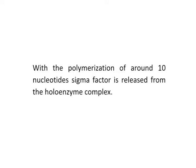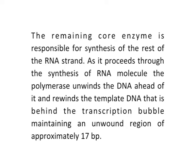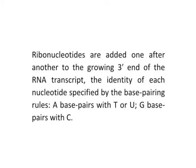With the polymerization of around 10 nucleotides, the sigma factor is released from the holoenzyme complex. In the elongation phase, the remaining core enzyme is responsible for synthesis of the rest of the RNA strand. As it proceeds through synthesis, the polymerase unwinds DNA ahead of it and rewinds the template DNA behind the transcription bubble, maintaining an unwound region of approximately 17 base pairs. Ribonucleotides are added one after another to the growing 3' end of the RNA transcript, with the identity of each nucleotide specified by the base pairing rule: adenine pairs with uracil, and guanine pairs with cytosine.